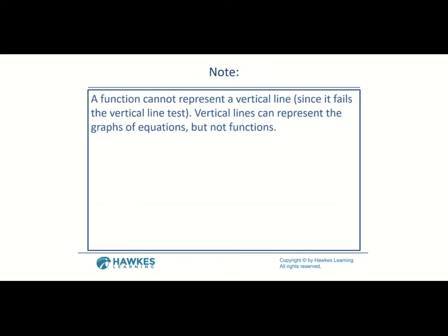In the previous section we discussed functions. For an equation to be a function, it must pass the vertical line test. A vertical line goes straight up and down, and if a graph is a vertical line, it cannot represent a function — those equations take the form x equals a number.